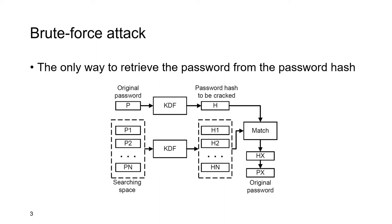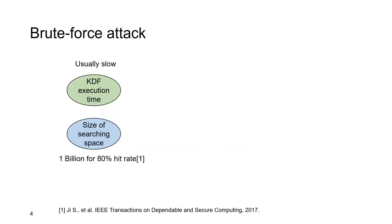How does the brute force attack work? This is a diagram of the brute force attack. The original password p is encrypted by the KDF to generate a password hash h. The attacker applies KDF to all passwords in the searching space, then matches every generated hash with the password hash h. If hx matches h, then the original password is found to be px.